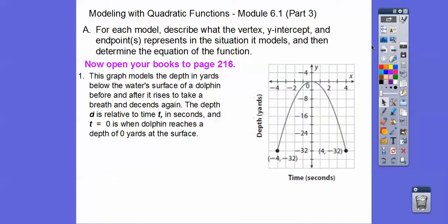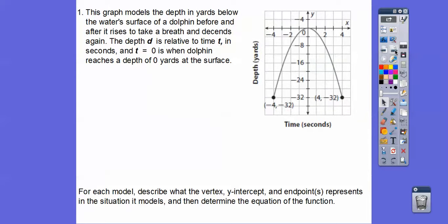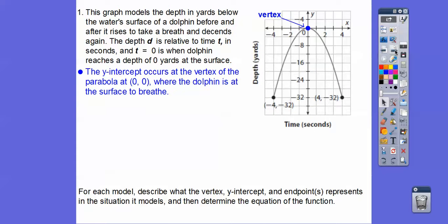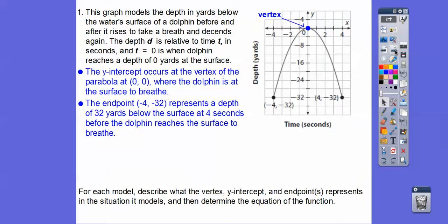So the y-intercept occurs at the vertex of the parabola at (0, 0), where the dolphin surfaces to take a breath. And this endpoint represents the depth of 32 yards — depth in yards — so this is sea level right here, and this negative 32 represents 32 feet below the surface.